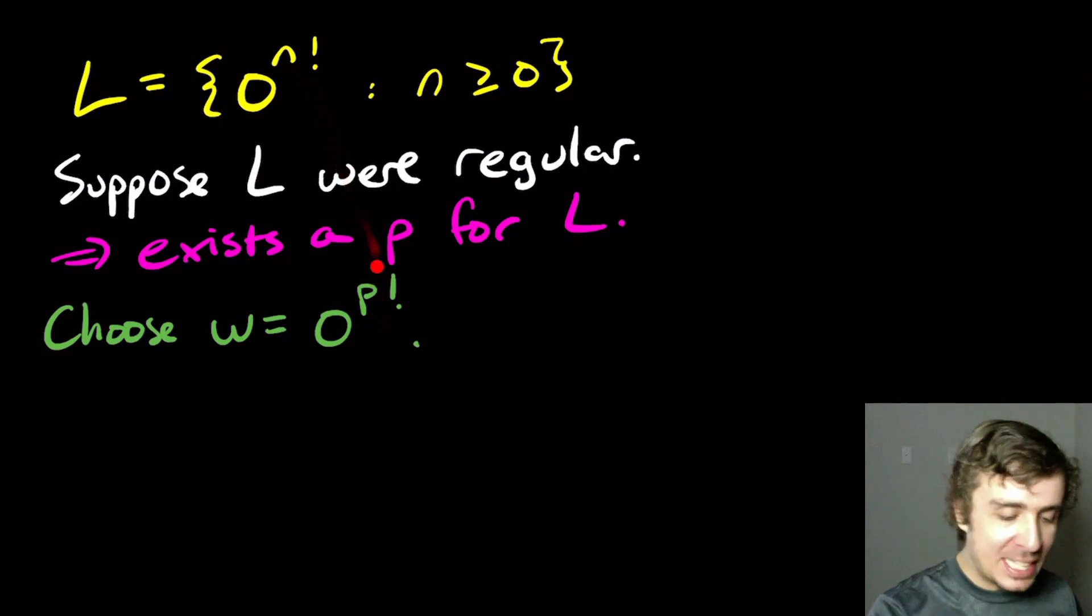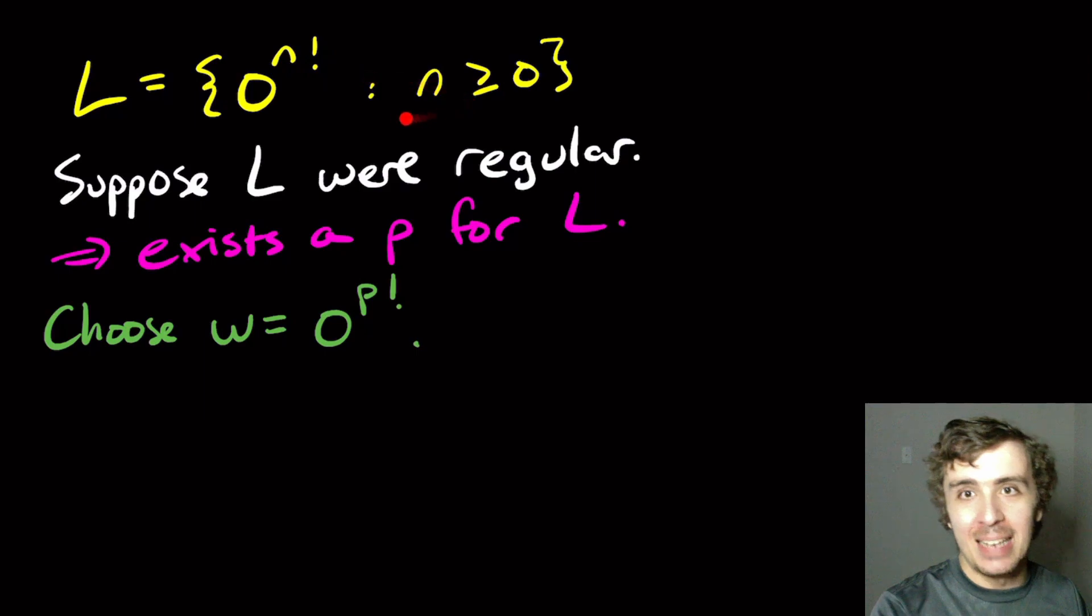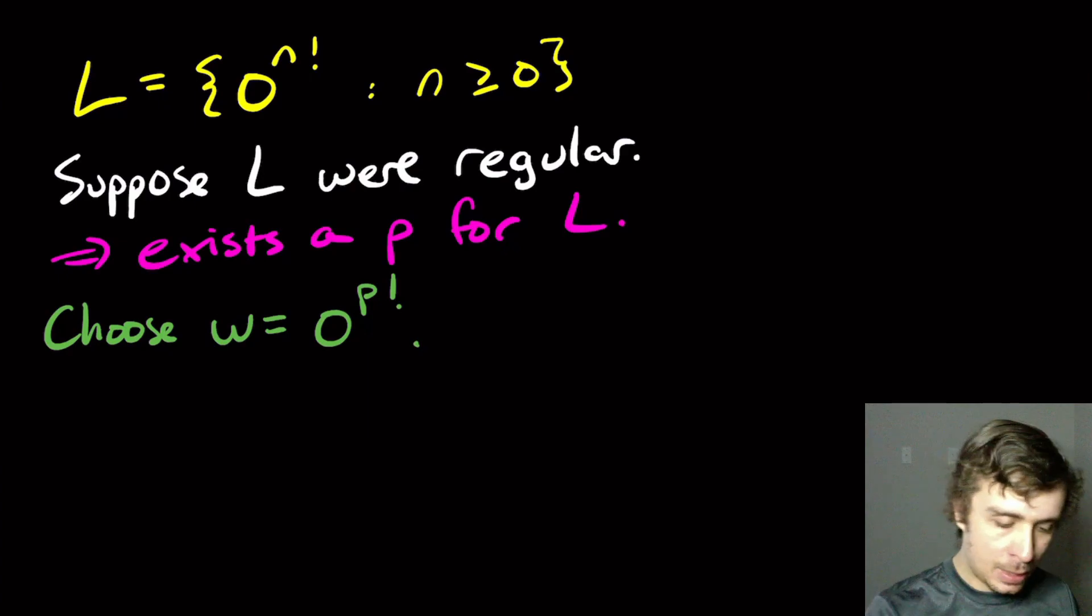And clearly this is in the language because we defined it, the number P, and this is quantified over all n, so therefore P is in there. Well, P factorial is in here. And P factorial is at least P.